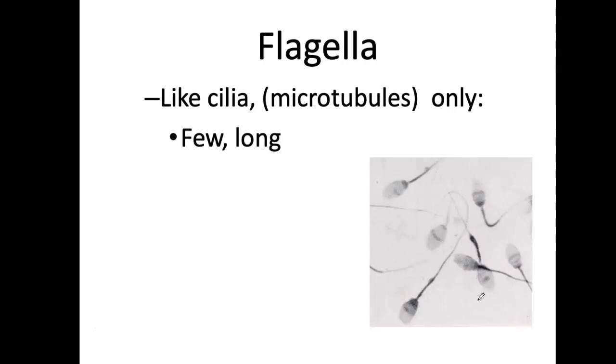Okay, three. We had villi. We had cilia. And now we have flagella. These are like cilia. They're also microtubules. Only, you don't have a bunch of them. Usually, you have just one. It can move the cell itself. Not something on the surface of the cell, but move the entire cell. And as you've seen here, this is the classic example of a sperm cell that can move, and it can move because of its flagella. Very, very cool.